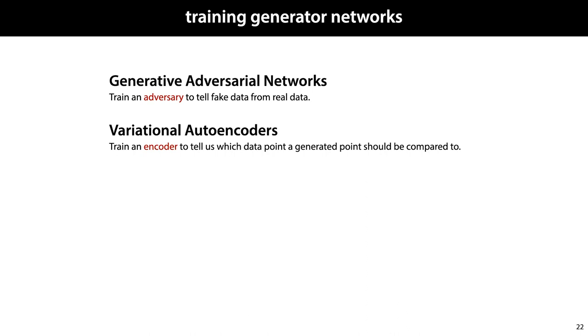Generative adversarial networks, which train an adversary to tell fake from real data, and variational autoencoders, which train an encoder to tell us which data point a generated point should be compared to. And these are the methods that we'll discuss in the rest of the lecture, starting in the next video with generative adversarial networks.